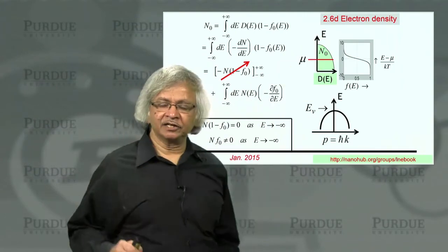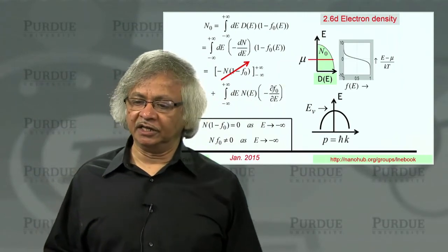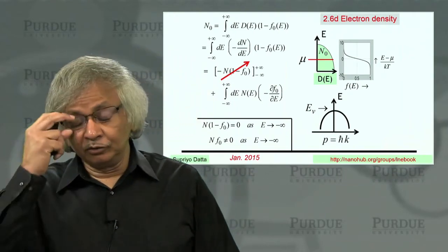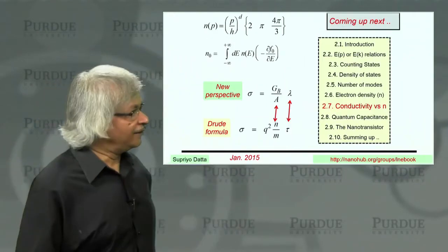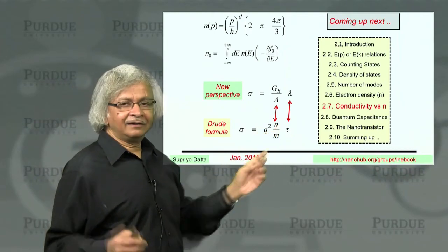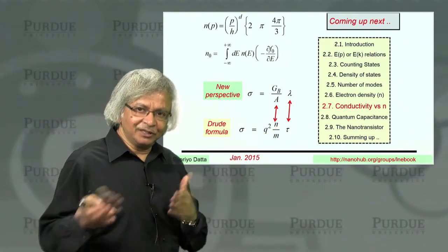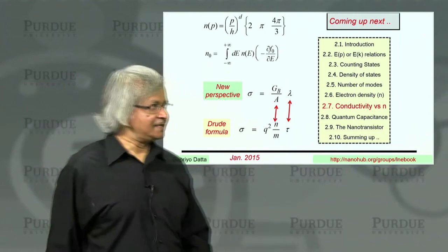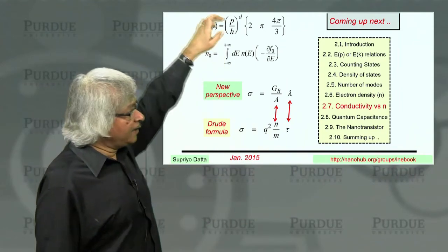And that I had mentioned in the context of Drude formula earlier, that in Drude formula, when you have this Q square Ntau over M, that N for valence bands really should be interpreted as the number of the empty states.